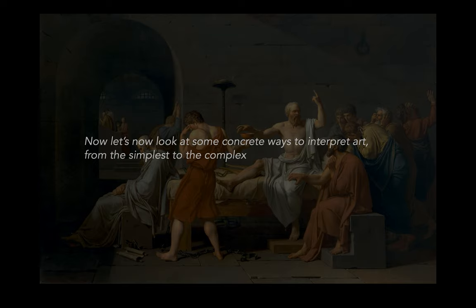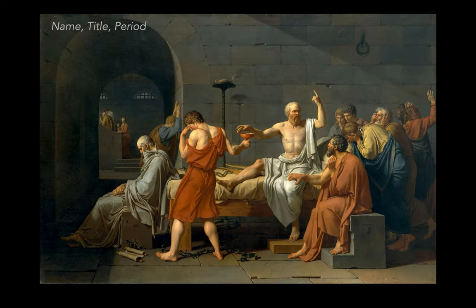We're going to go from the most concrete and simple tools to interpret art all the way to probably some of the more complicated and complex. When you're interpreting or trying to understand a work of art, you're going to try to do all of this in tandem. We're going to stay with one work and build on it — almost like an onion — and just peel back the layers of complexity.